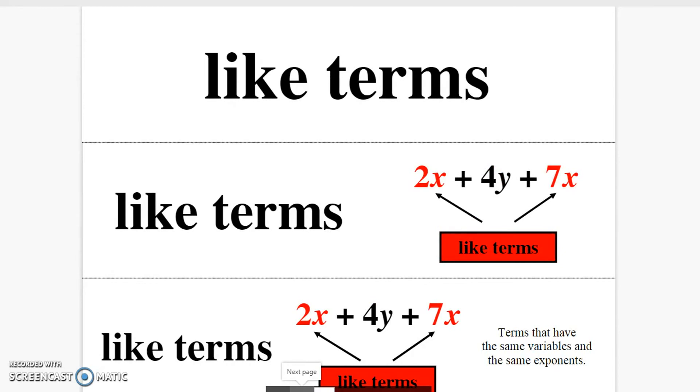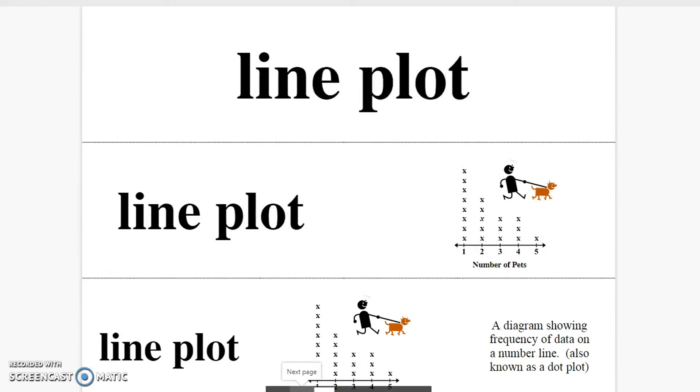Like terms. Terms that have the same variables or the same exponents. Line plot. A diagram showing frequency of data on a number line, also known as a dot plot.